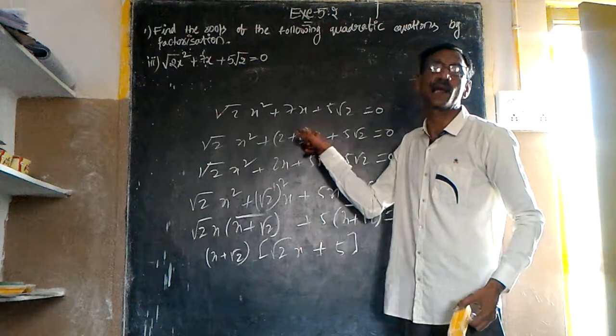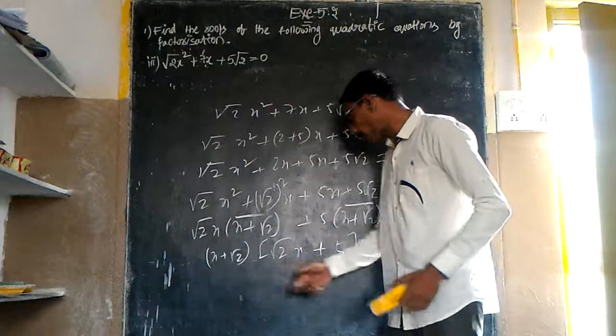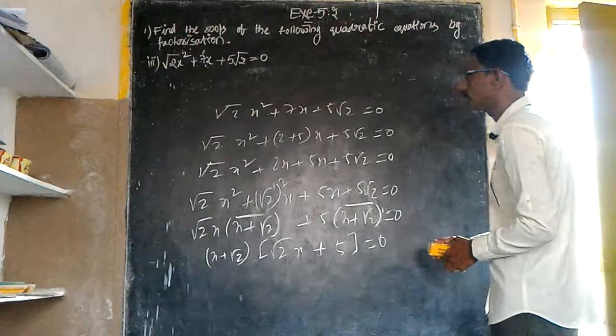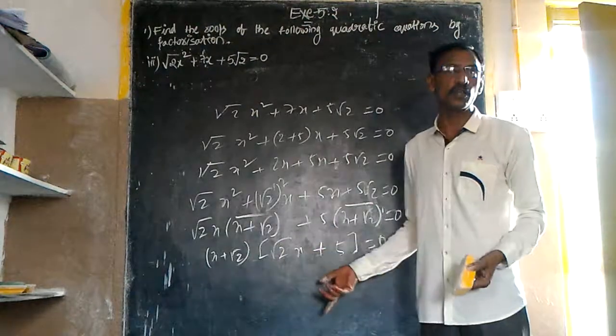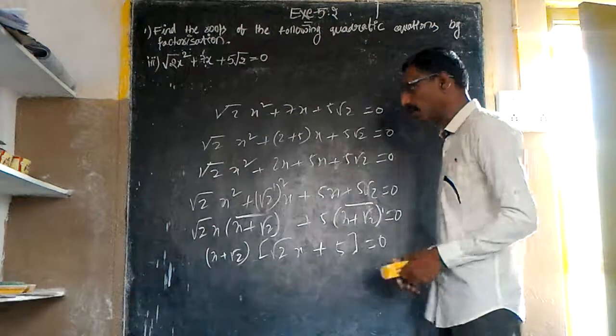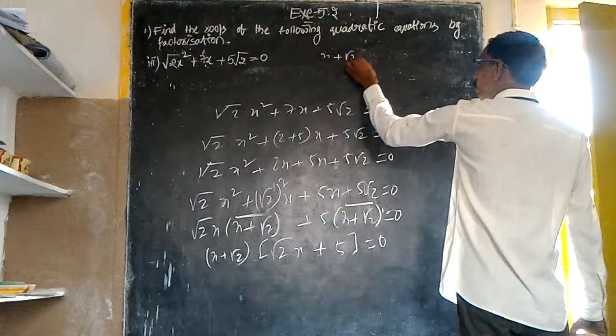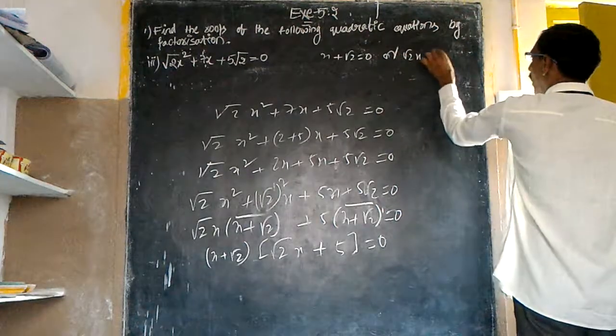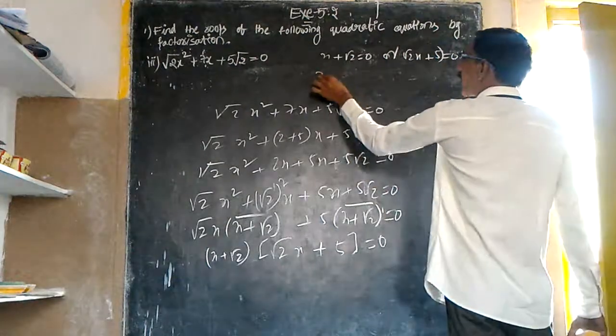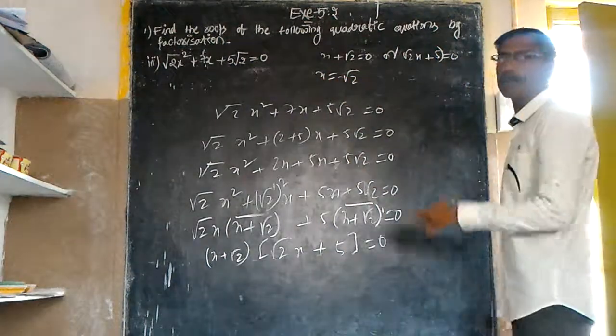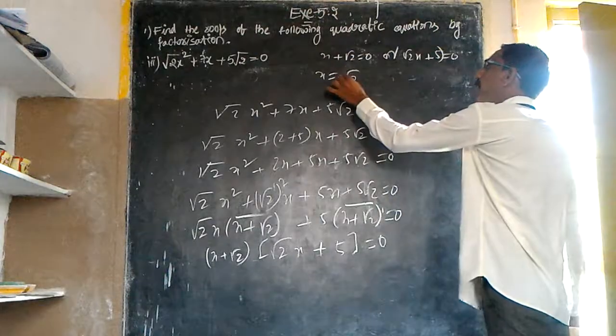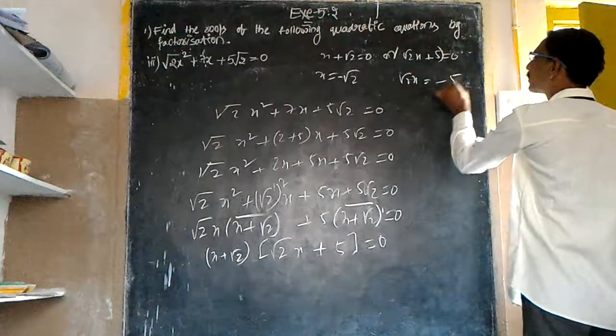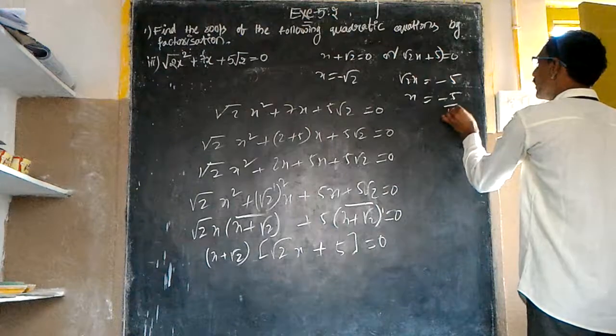x + √2 = 0 and √2x + 5 = 0, so x = -√2, and x = -5/√2.